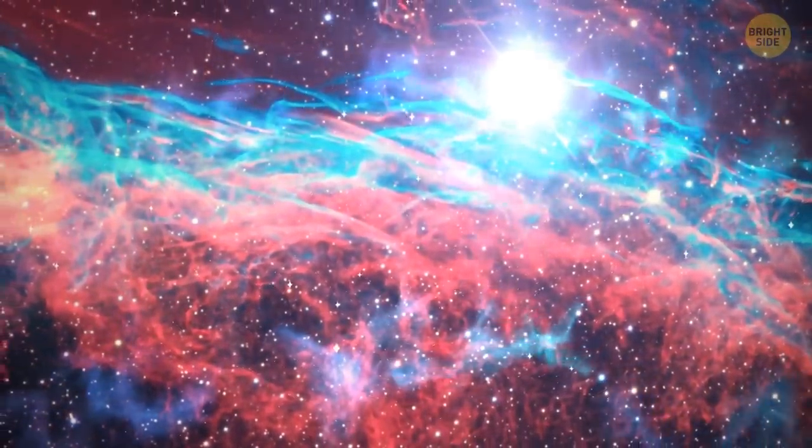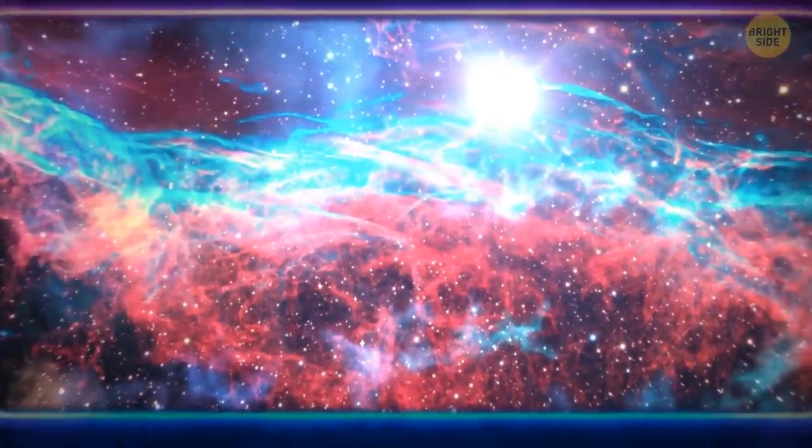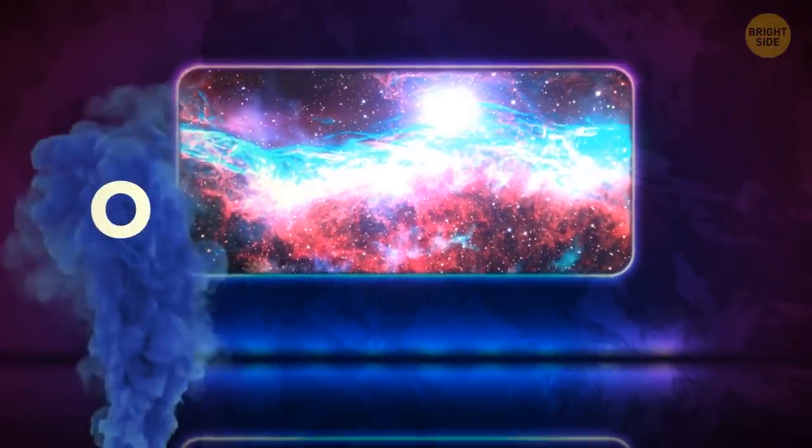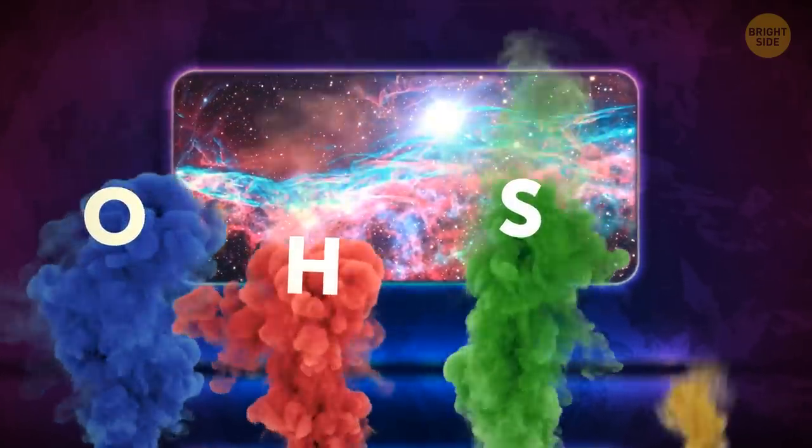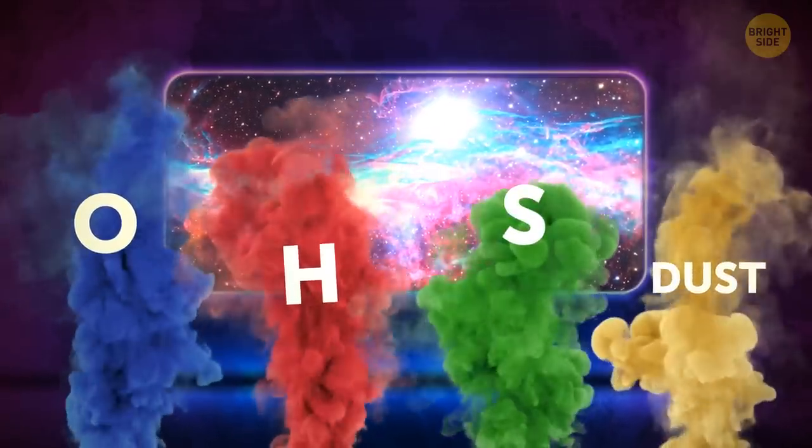Oxygen, hydrogen, and sulfur glow in ionized states like a fluorescent light bulb. Oxygen blue, hydrogen red, some green and sulfur, and dust glow as yellow-orange.